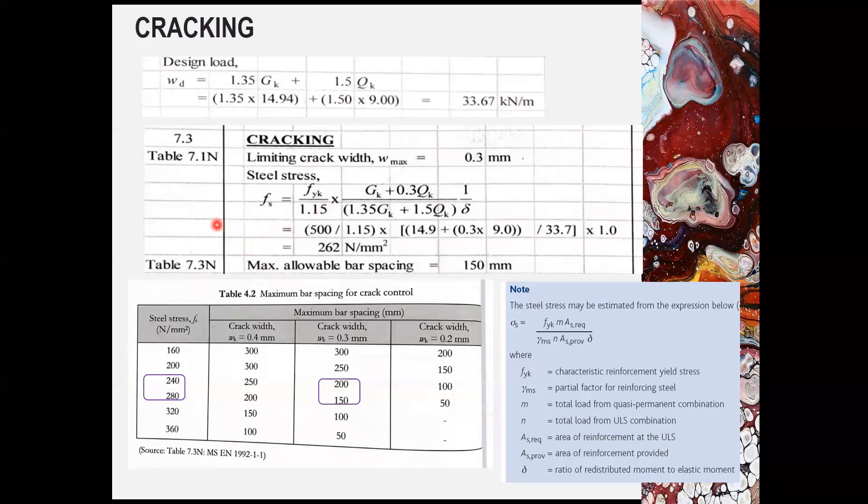Refer to table 7.3 N in Eurocode 2. And refer to crack width, appropriate crack width that you wish to design. For example, in this case, we will design for crack width 0.3 mm. So you can have determined the maximum allowable bar spacing for crack control by using the interpolation. In this case, the maximum allowable bar spacing for crack control is proposed as 150 mm.